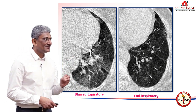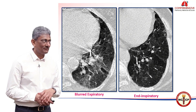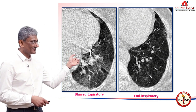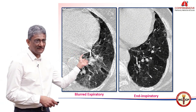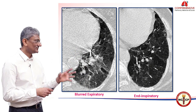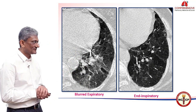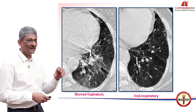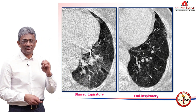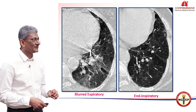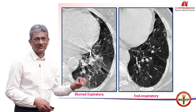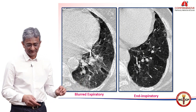Yes, there are likely areas of air trapping, because we see that the image on the left is expiratory and therefore we can pick that up as well. But the kind of image that we require is the image on the right.